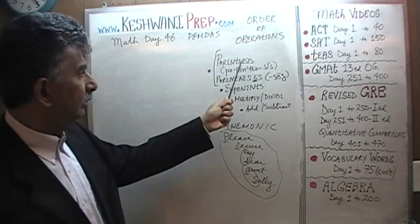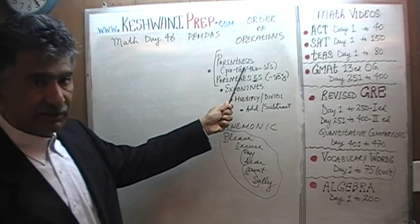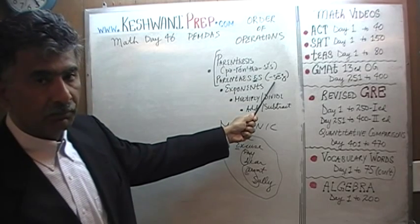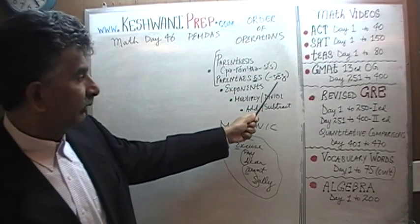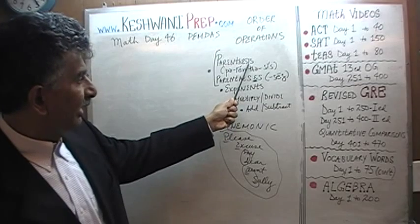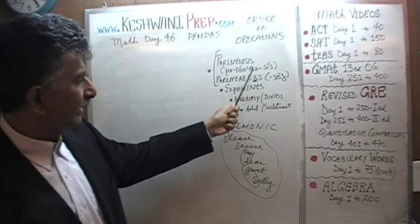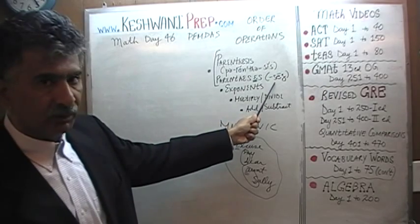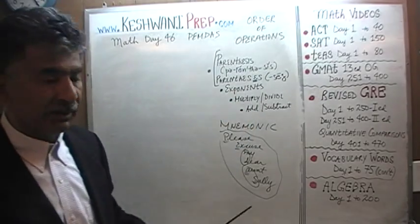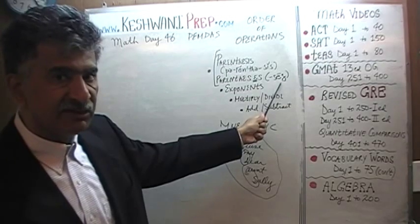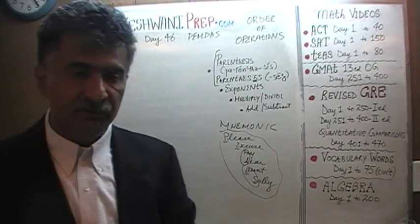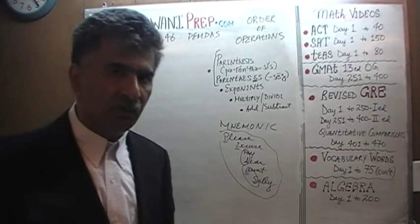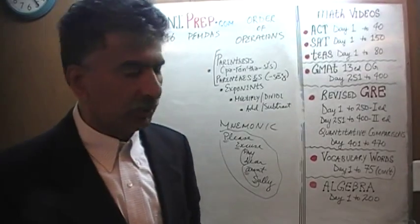P here stands for parenthesis — that's the singular, parenthesis. If you have the plural, more than one parenthesis, then the spelling changes from S-I-S to S-E-S, and it is pronounced parentheses — just like hypothesis and hypotheses. Make sure you pronounce it correctly if it is being used in the plural form.